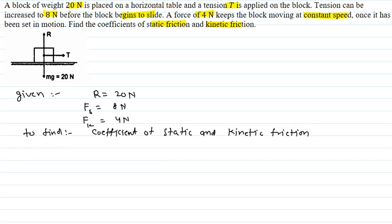So, we use this formula: friction force F is equal to mu into R. We use this formula for both kinetic friction and static friction. For static friction, mu is equal to 8 divided by 20, which gives mu equal to 0.4. The coefficient of static friction mu is equal to 0.4.